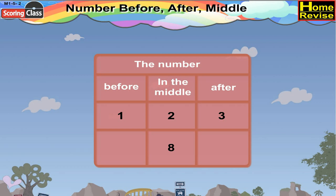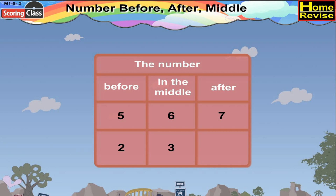Now let us see the next chart. What comes after 8? It is 9, so write 9 in the after column. Now let us see the next chart. We have 6 in the middle. What comes before 6? Correct, 5, so write 5 in the before column. What comes after 6? Right, it is 7, so write 7 in the after column. What comes before 3? Yes, you are right, 2, so write 2 over there. And what comes after 3? Of course, it is 4, so write 4 over there.